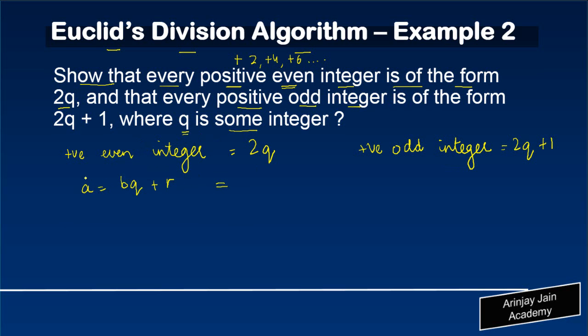If we assume that a over here, you know that a is the larger number, b is the smaller number, and r—what was the property of r? r was greater than or equal to 0, but less than b.